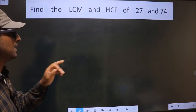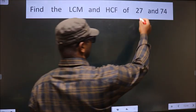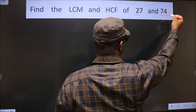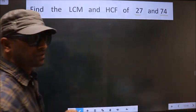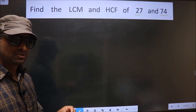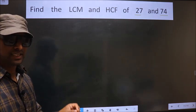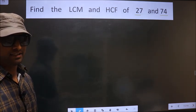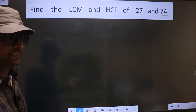Find the LCM and HCF of 27 and 74. To find the HCF and LCM, first we should do the prime factorization of each number separately.